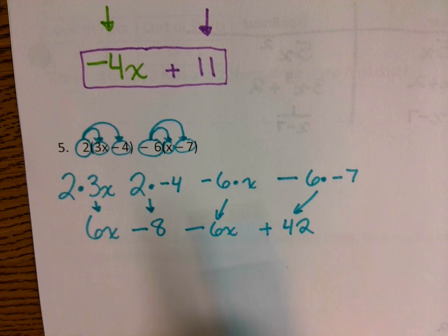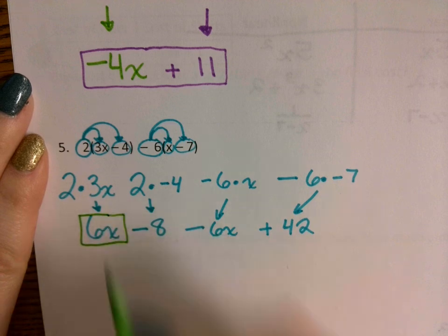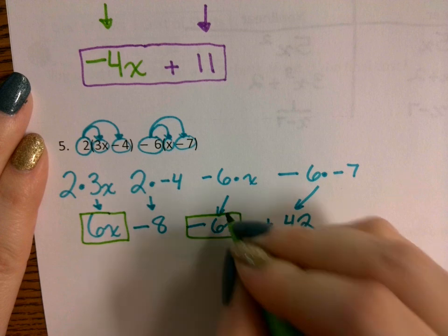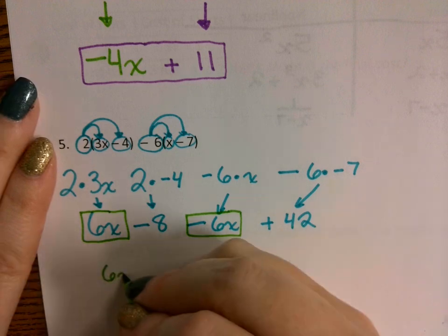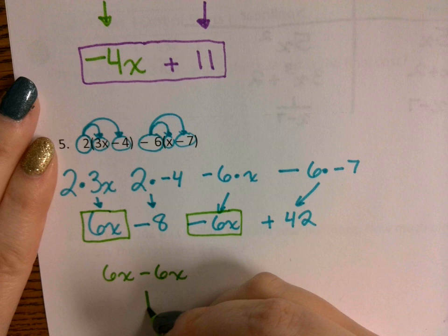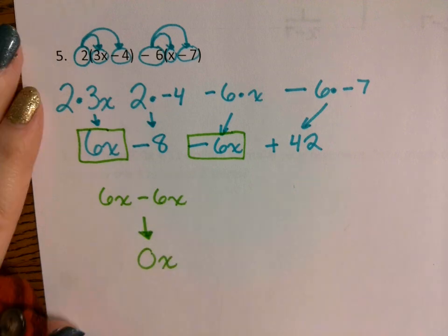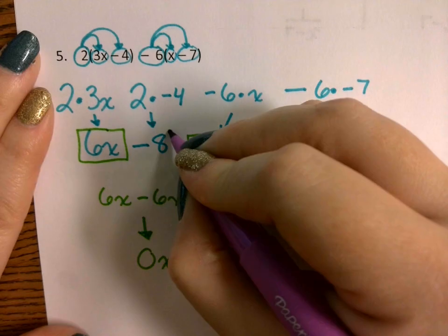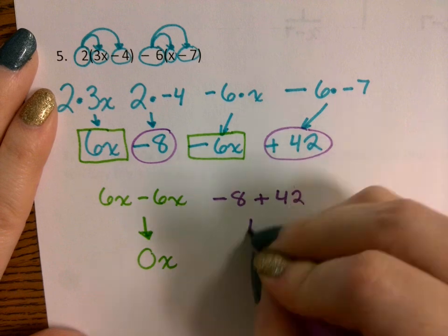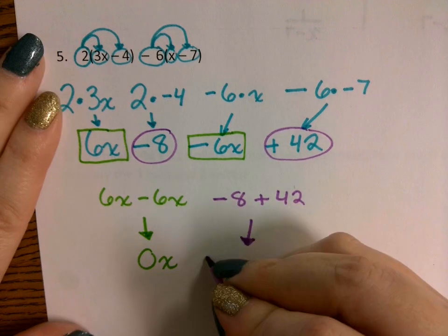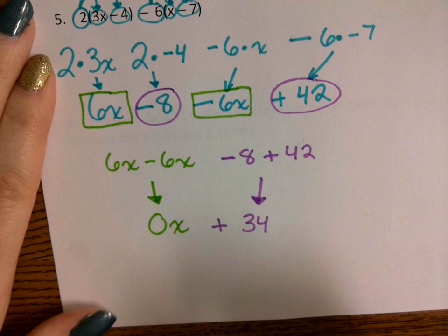Now we focus on like terms. 6x minus 6x — since 6 minus 6 is zero, that gives 0x. Then negative 8 plus 42 comes out to positive 34. So the answer is 34. You don't need to write 0x — just write 34.